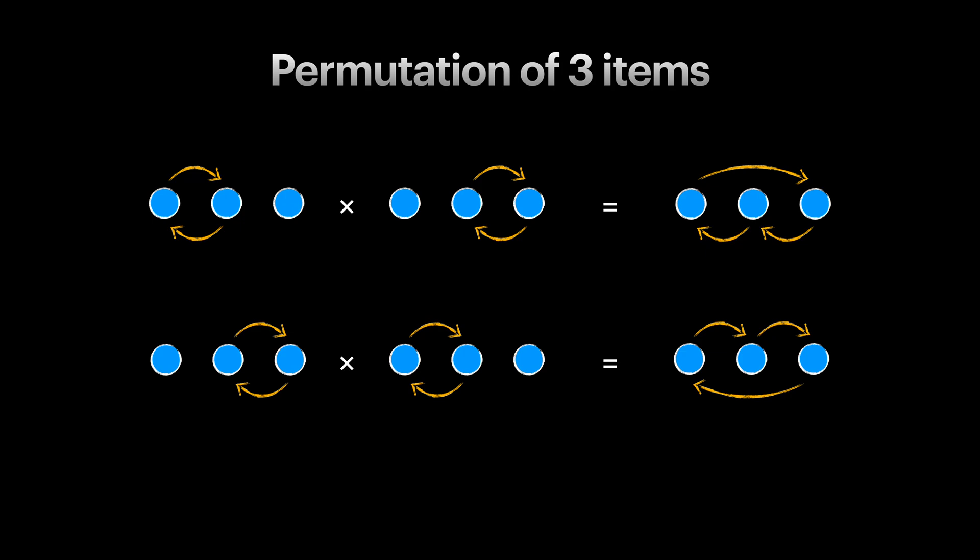A composition is commutative if for any A and B, composing A and B is equal to composing B and A. In general, groups don't need to be commutative. If they do, they are called abelian groups.